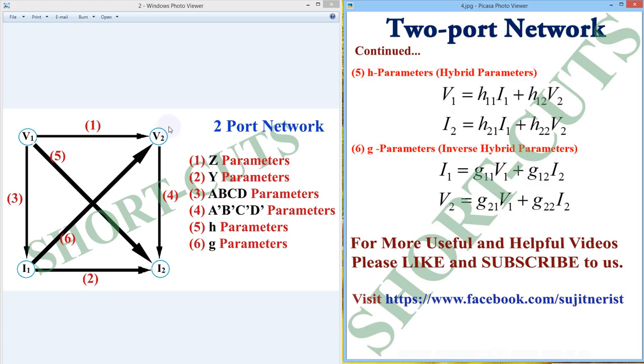Then last is your inverse h, or you can say g parameter, or inverse hybrid parameter. So here we are going in this direction. So i1 and v2 will be in primary side and your v1 and i2 will be in secondary side. Please keep in your mind the sequence of arrow. So v1 and i2 is coming in the secondary side.